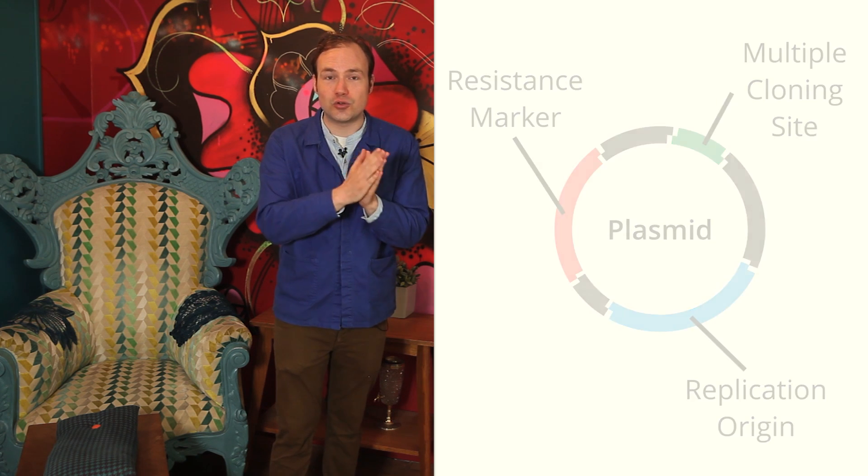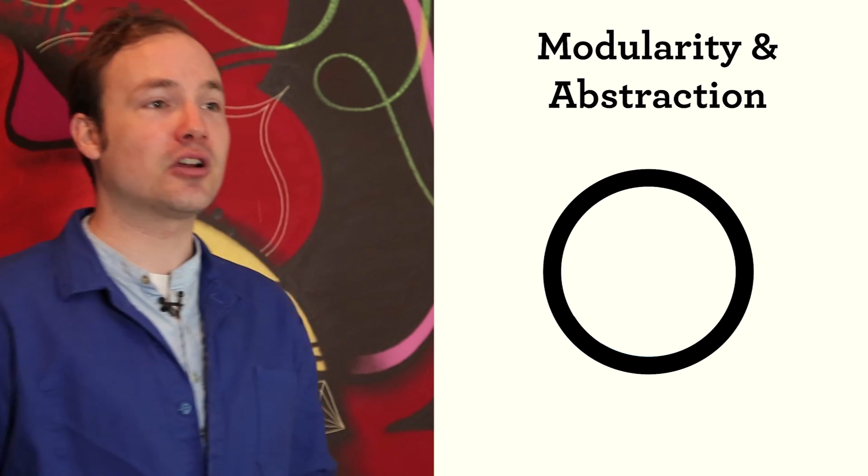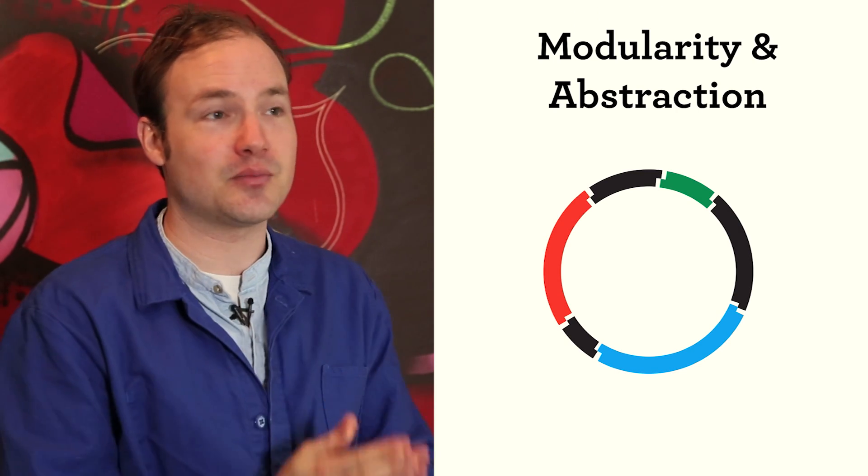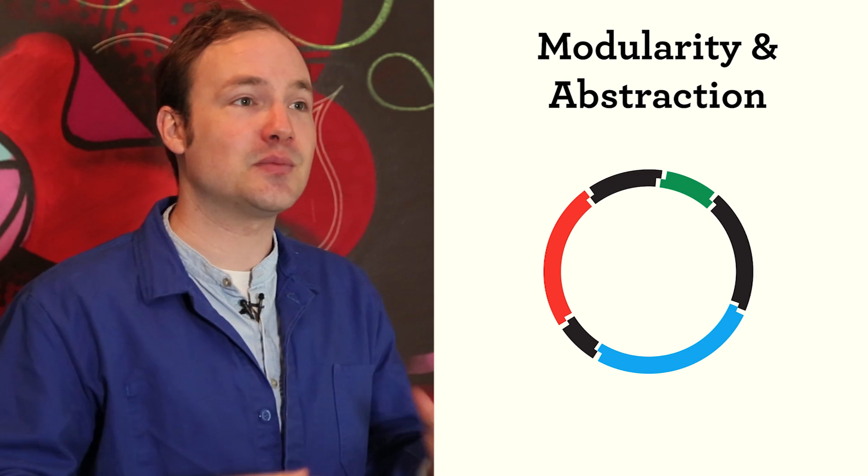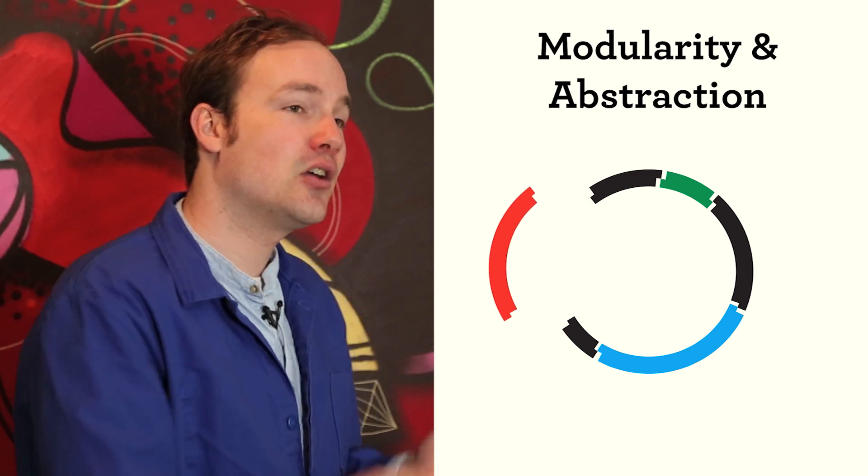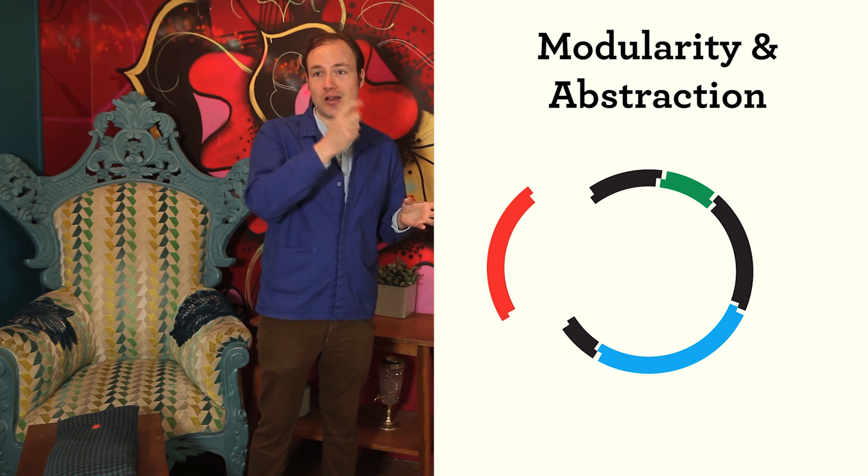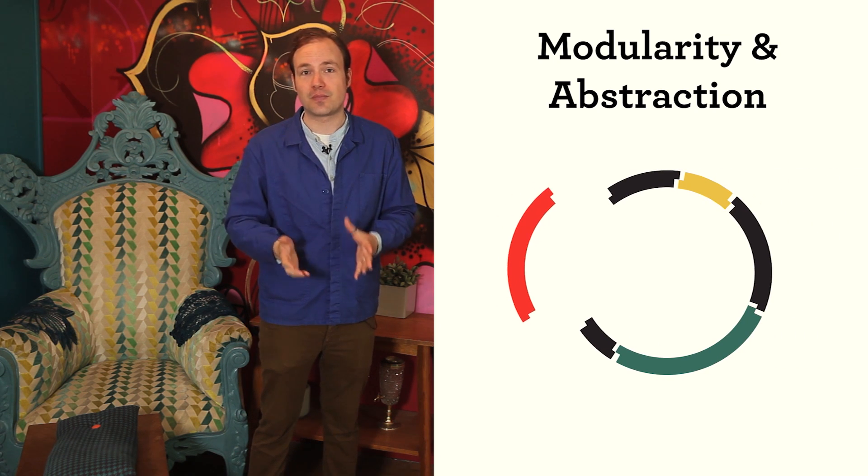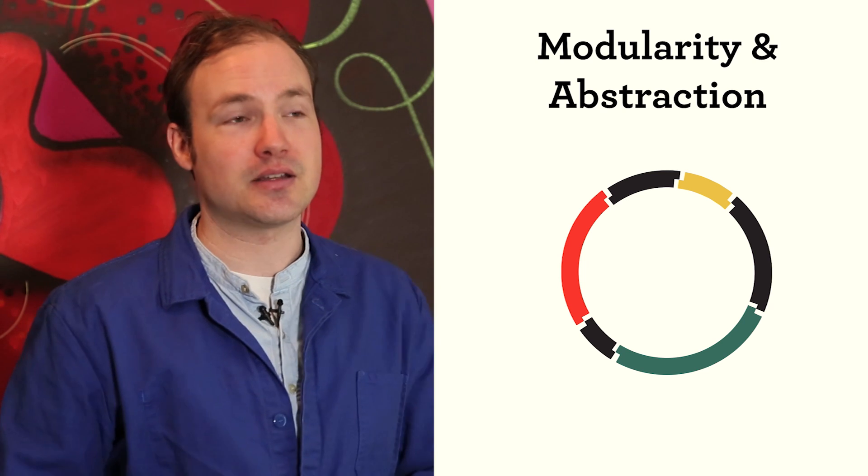Plasmids illustrate two fundamental concepts in synthetic biology, modularity and abstraction. A DNA sequence is modular when we can associate specific functions with specific well-defined subsequences. For example, we don't need to understand the whole plasmid to understand what antibiotic resistance it carries. We only need to look at one specific region. That region can be cut out, copied, and moved to other plasmids where it will function similarly. Modularity lets us simplify a DNA sequence by looking at it one piece at a time.